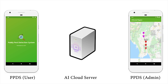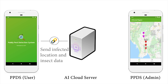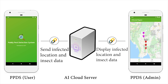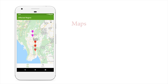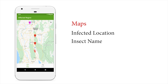The admin application is also connected to the AI cloud server. Once the AI cloud server receives the inferred location and insect data from the user application, it will import this location and insect data to the admin application. In the admin application, the inferred location and the insect name are shown on the map.